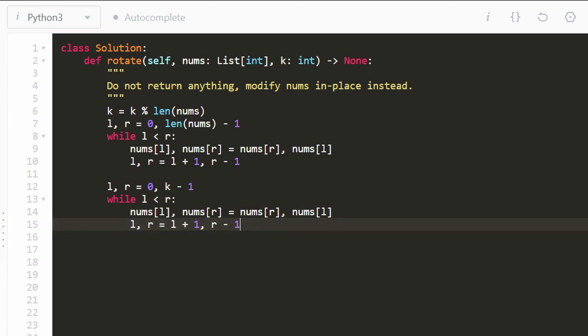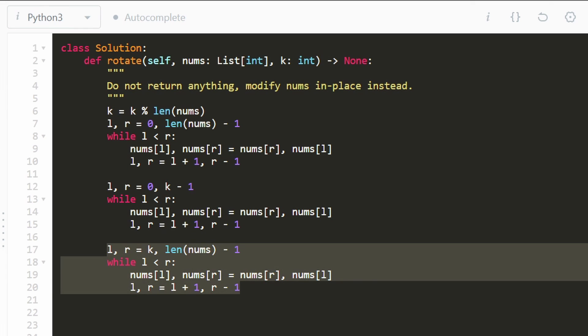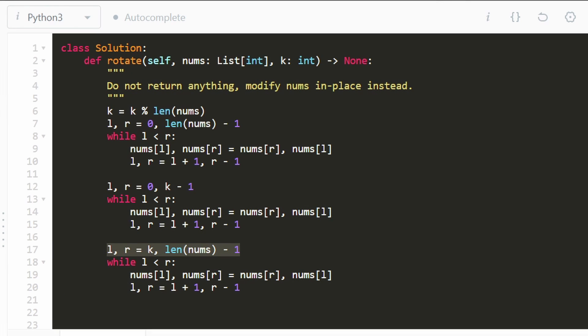We do that with the exact same while loop and then once again we're going to do another reversal. This time we're going to do the remaining portion. So we just did from zero to k minus one. Let's do the remaining portion from k until the end of the array. And you know that's all we really are updating. So you can kind of guess how this helper function is going to be structured. Just passing in two different values for left and right. So that is the entire code.